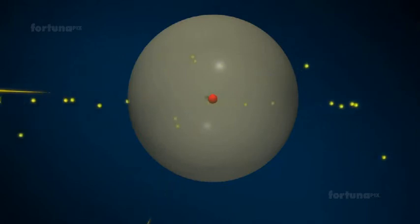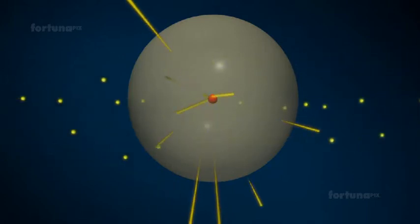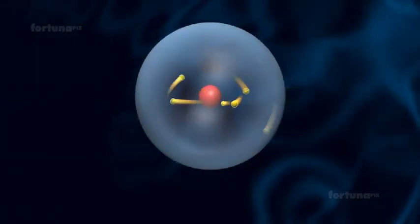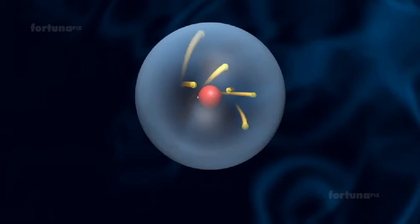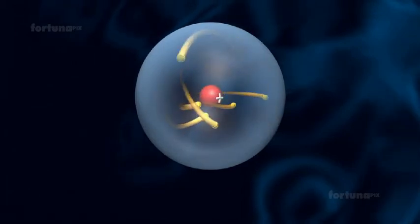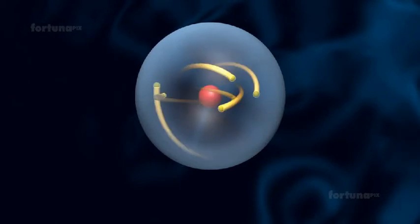Rutherford presented the experimental results to describe the structure of an atom. He stated that the atom is made up of a central, dense, positive charge surrounded by a cloud of orbiting electrons. He did not use the term nucleus.